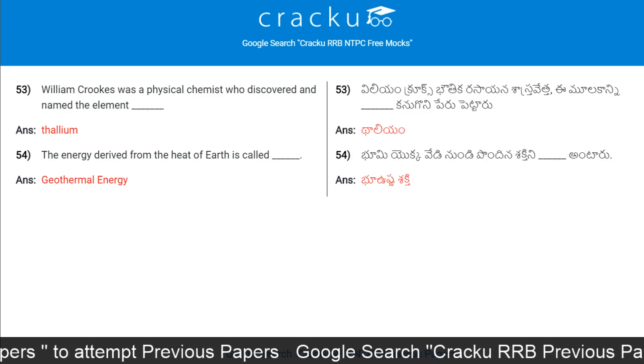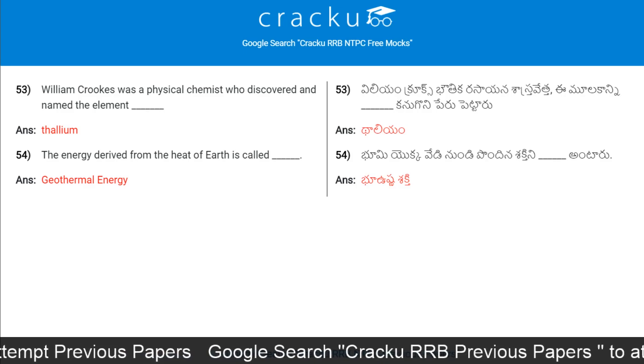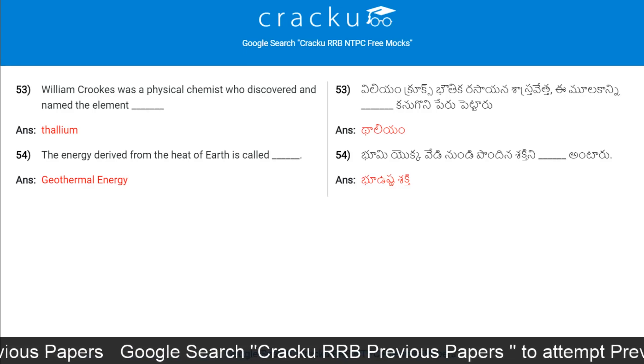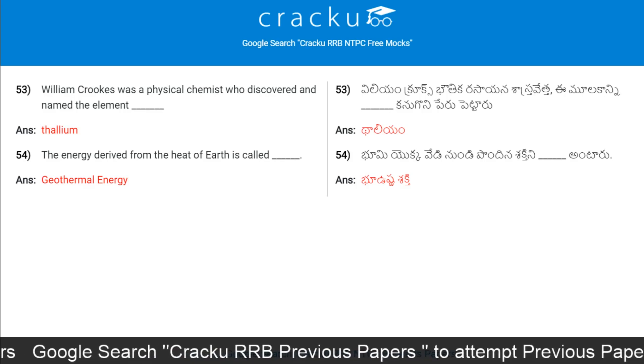William Crookes was a physical chemist who discovered and named the element thallium.